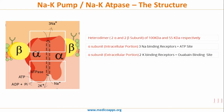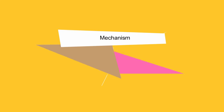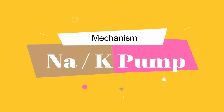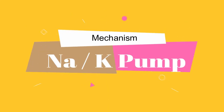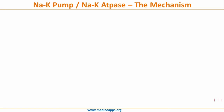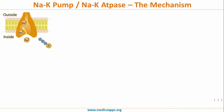On a side note, ouabain is a cardiac glycoside, also known as g-strophanthin. It is a plant-derived toxic substance that was traditionally used as an arrow poison in eastern Africa, both for hunting and warfare. Finally, the beta subunit has three extracellular glycosylation sites.